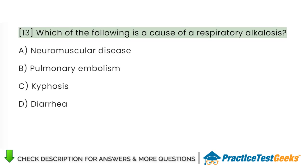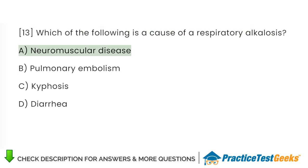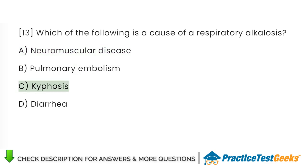Which of the following is a cause of a respiratory alkalosis? A. Neuromuscular disease. B. Pulmonary embolism. C. Kyphosis. D. Diarrhea.